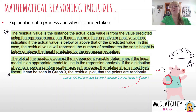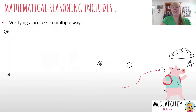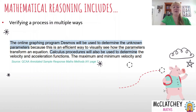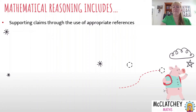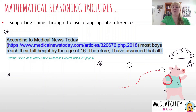Mathematical reasoning could also be verifying a process in a variety of ways. In one example from the QCAA, they used Desmos and also calculus procedures — two different methods to confirm their results, and that is part of their mathematical reasoning. Mathematical reasoning can also be supporting your claim using a reference. For example, from the general maths PSMT from the QCAA: 'According to Medical News Today, students reach their full height by the age of 16' — a claim supported by a reference.